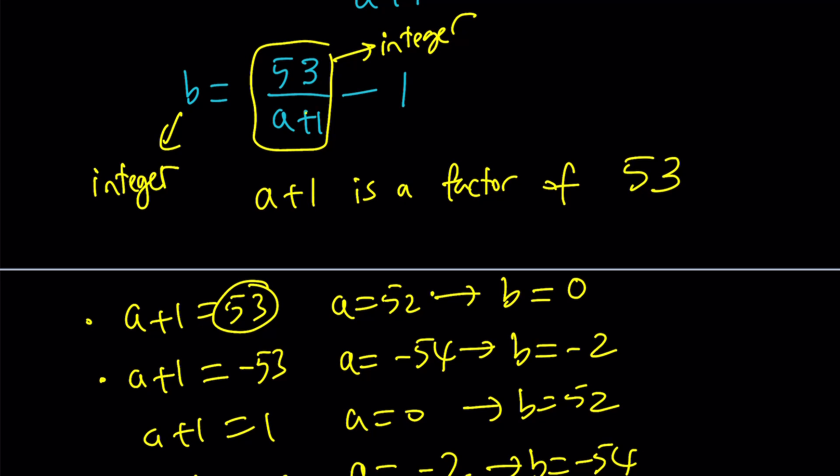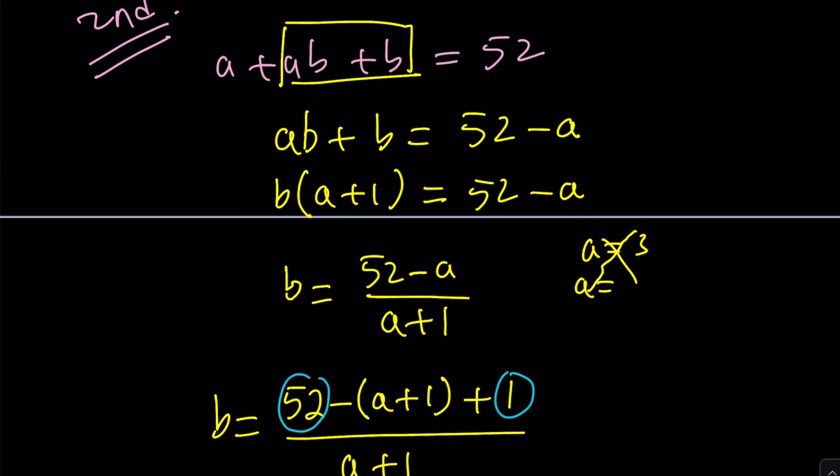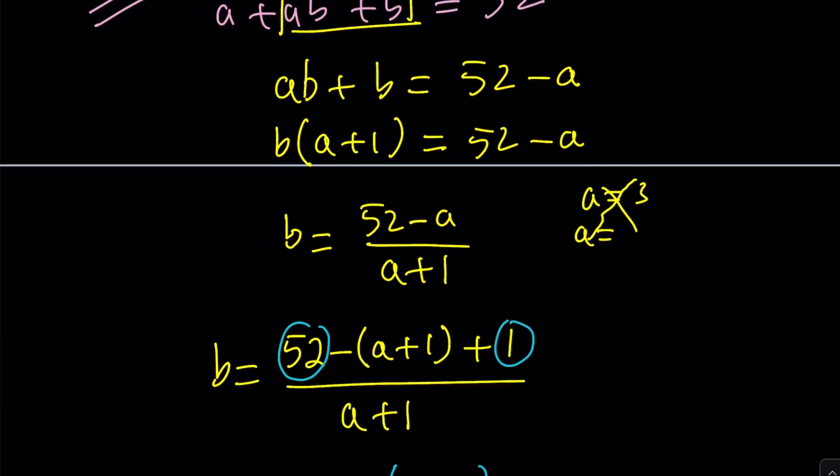But we're looking for a plus b values, so you can just add them. And guess what? You're going to end up with the same solutions. There's going to be two distinct values, 52 and negative 56 as before.